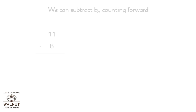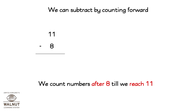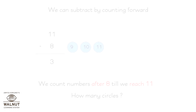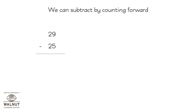How about 11 minus 8? We do it the same way — we count numbers after 8 until we reach 11: 9, 10, 11. How many circles? 3. So 11 minus 8 is equal to 3. Let's try a bigger number.